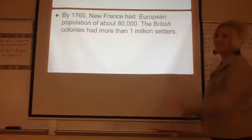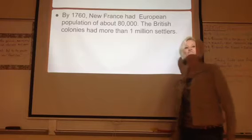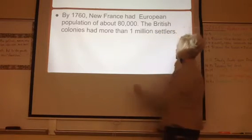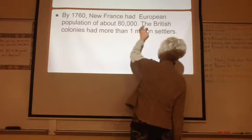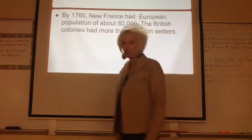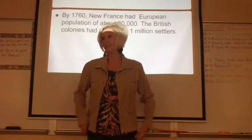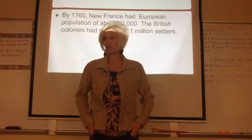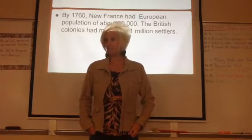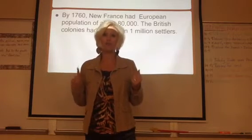By 1760 — highlight this — New France had 80,000 people. But by that same time, the British — highlight the British — had more than 1 million people. So if we do a ratio, how badly does the British outnumber the French? Just an estimate. 10 to 1. That's right. So you've got about 10 British settlers to every 1 French settler.